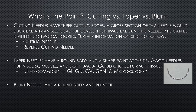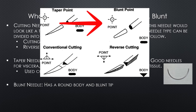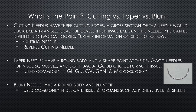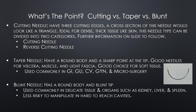The blunt needle has a round body like the taper point needle, but with a blunt tip instead of a pointed tip. The blunt tip makes it safer to handle, resulting in fewer needle stick incidents, though you still have to be careful. Blunt tip needles are ideal for very delicate and soft tissue. Surgeons sometimes use these when working in areas that are difficult to visualize or reach, since they may be doing a somewhat blind pass with the needle. One area where you commonly see blunt tip needles used is in the abdominal cavity.